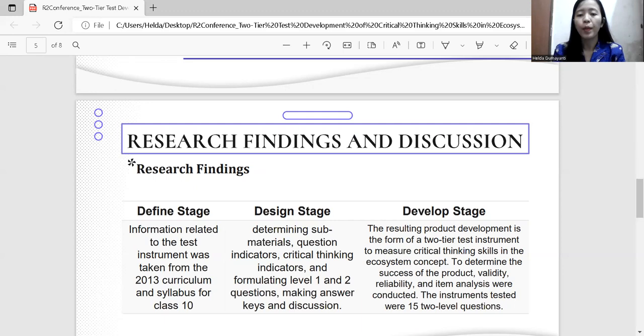Develop steps. The resulting product development is in the form of a two-tier test instrument to measure critical thinking skills in the ecosystem concepts. To determine the success of the product, validity, reliability, and item analysis were conducted. The instrument tested were 15 two-level questions.